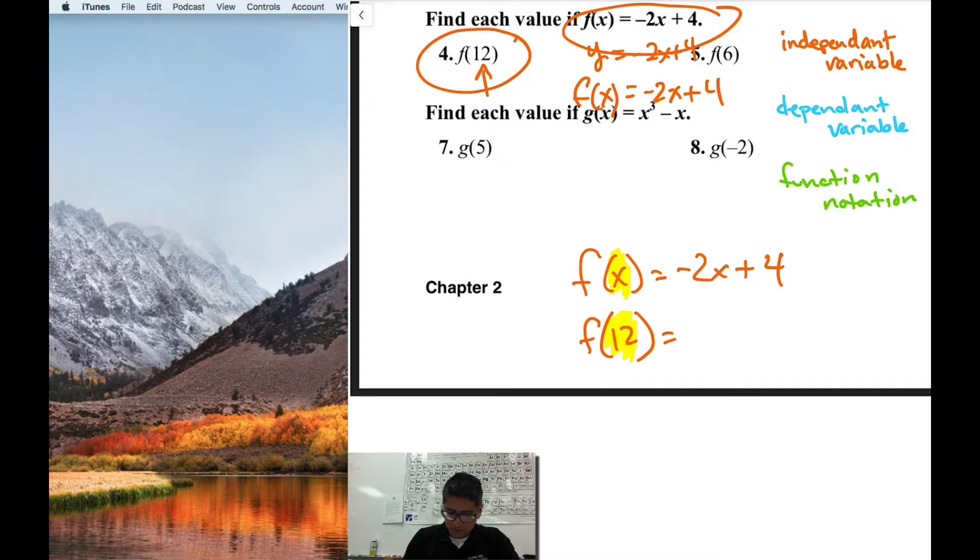So I'm going to rewrite my equation now as negative 2, and now instead of having the x there it's going to be 12. And now after I input this term in there, I can just work out the equation like I normally do. So negative 2 times 12 is negative 24 plus 4 is negative 20.